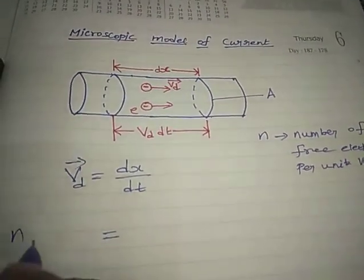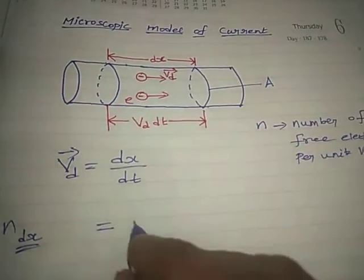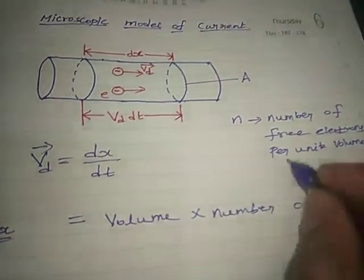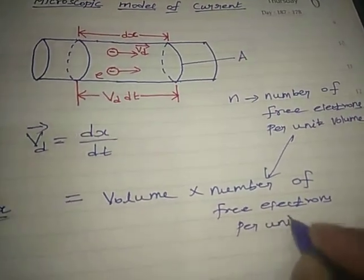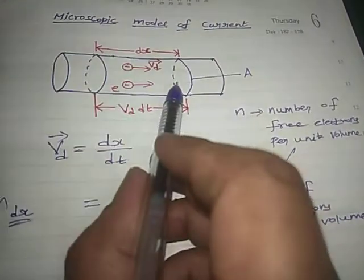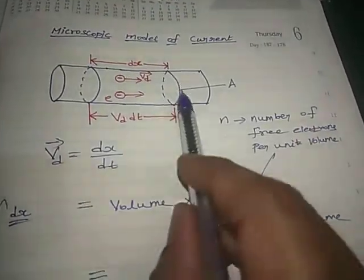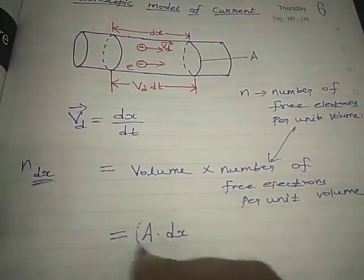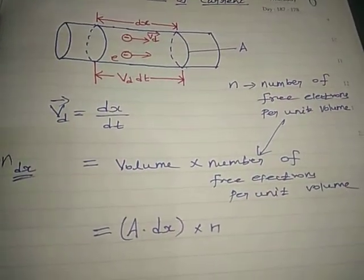The number of free electrons in the volume of length dx is equal to volume multiplied by the number of free electrons per unit volume. The volume here is area A multiplied by length dx, so the total number of free electrons in this volume element is A × dx × n.